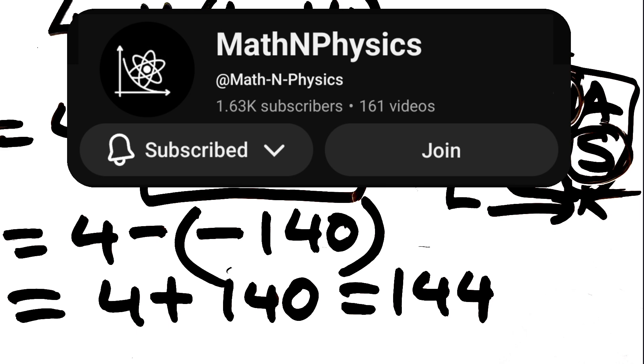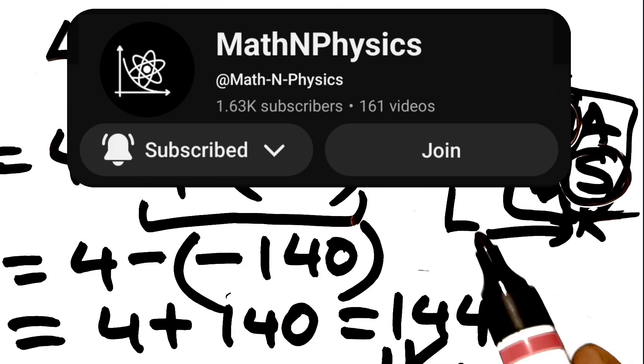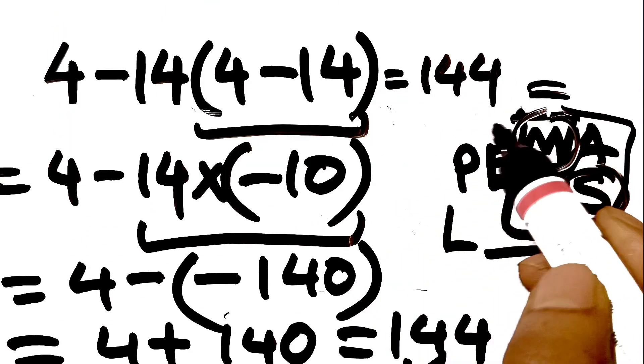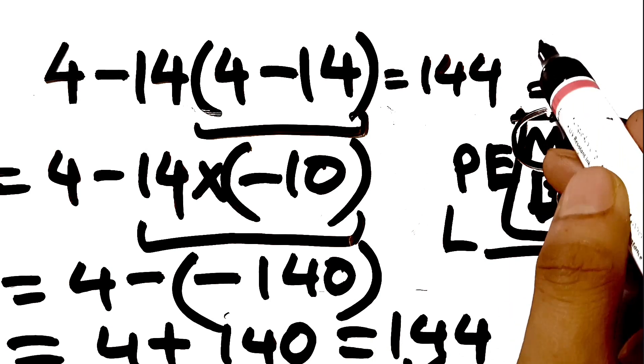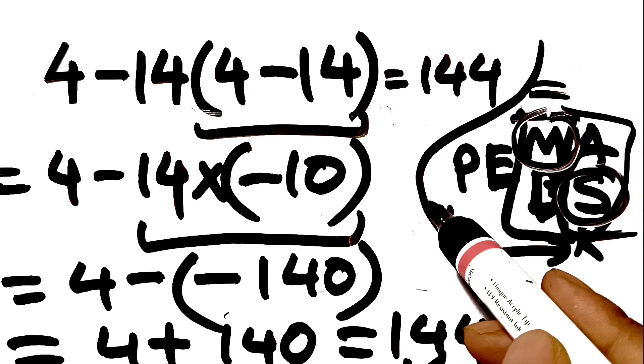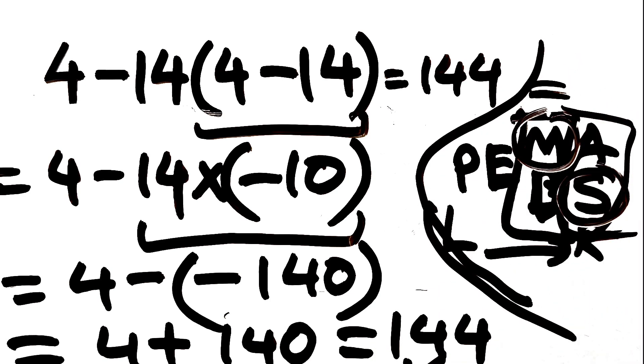And this is our final answer to this problem. The correct answer is 144. Did you follow the order correctly and handle the negative numbers properly? Let me know your answer in the comments right now. I will pin the first comment with the correct answer. Please like this video and subscribe to the channel for more challenging math questions.